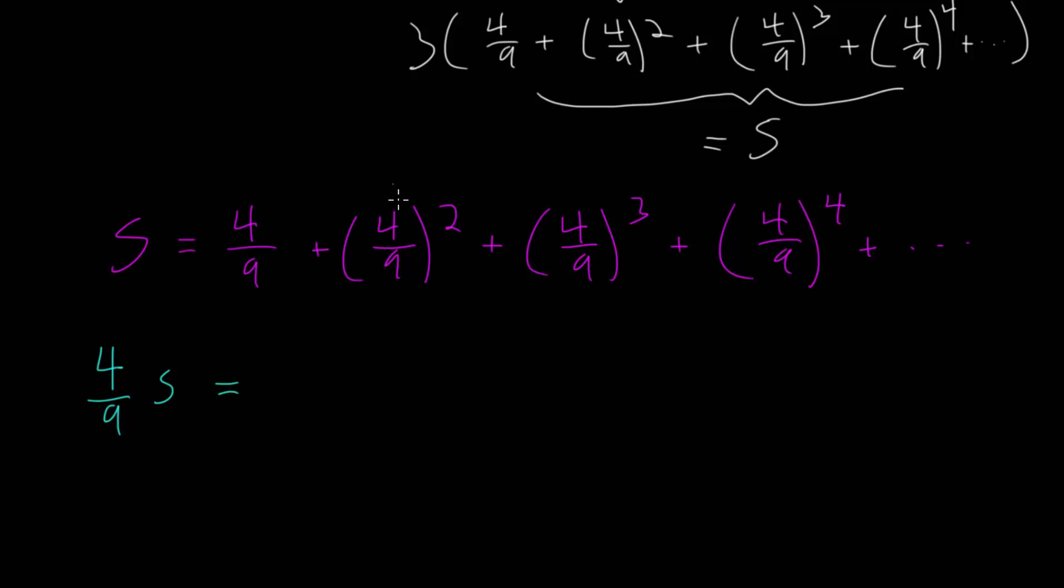We're just distributing to each of the terms, meaning that 4 over 9 times 4 over 9, that is just 4 over 9 squared. 4 over 9 squared times 4 over 9, that is just 4 over 9 cubed. And you probably noticed the pattern at this point. 4 over 9 cubed times 4 over 9 is 4 over 9 to the fourth, and so on.